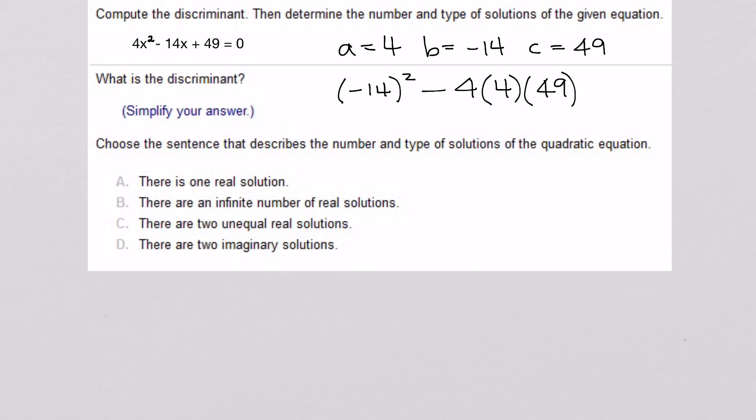So, 14 squared is clearly 196 minus, and then 4 times 4 times 49 is 196. And so, this equals 0.